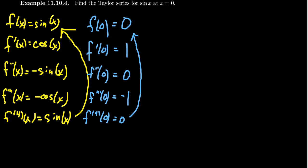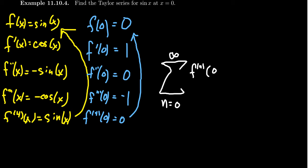Therefore, the Maclaurin series for sine will look like the sum as n ranges from 0 to infinity. The general formula is the nth derivative evaluated at your center — we plug in 0 — divided by n factorial, times x to the n. Don't forget the n factorial.